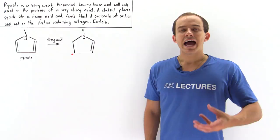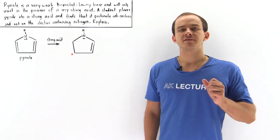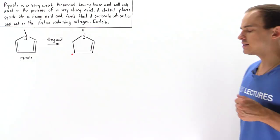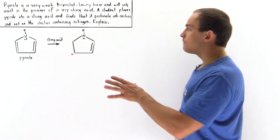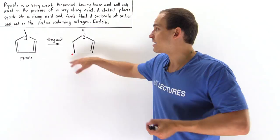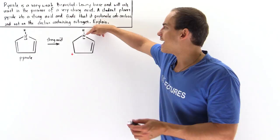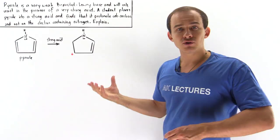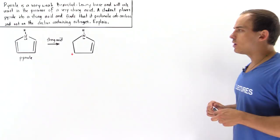Pyrrole is a heteroaromatic molecule that can sometimes act as a Bronsted-Lowry base. It is a very weak base and only acts as a base under very strong acid conditions. So let's suppose a student places pyrrole into a solution containing a strong acid and observes that a certain intermediate is formed. The question is: why is this intermediate formed? Why does the H atom of the acid end up on the carbon instead of the nitrogen, even though the nitrogen contains the lone pair of electrons?